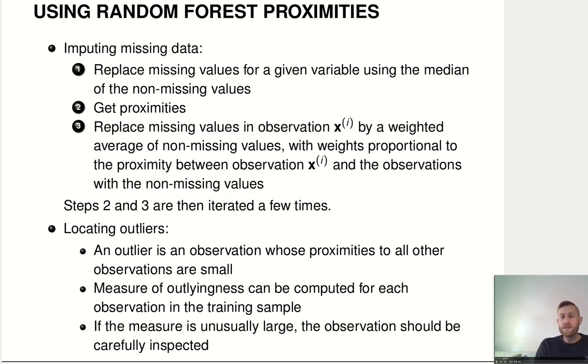Okay. Proximities can also be useful for locating outliers. So, an outlier, what's an outlier? It's an observation that is far away from all the others. So, an untypical observation. What that means is that typically, that will be an observation that isn't very close to any of the other ones. So, it has small proximities to all other observations. And we can measure that outlierness for each observation and use that to identify feature vectors that are very untypical.